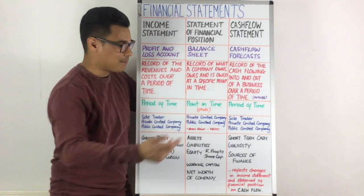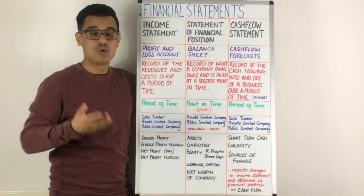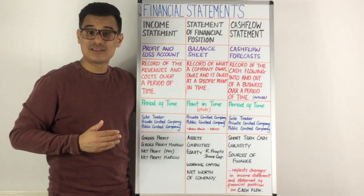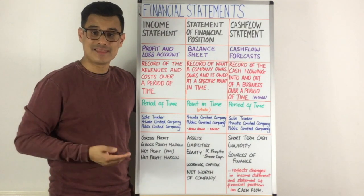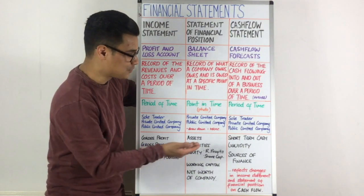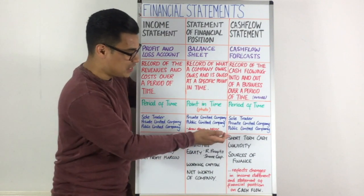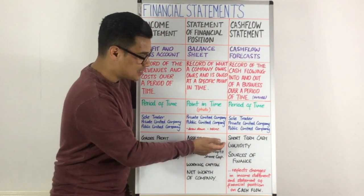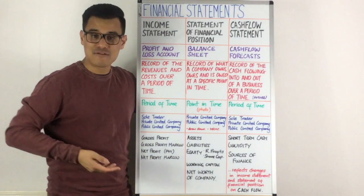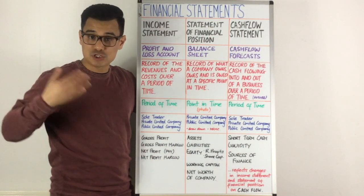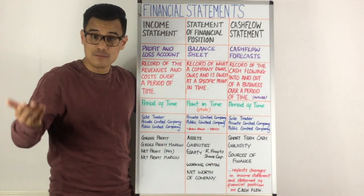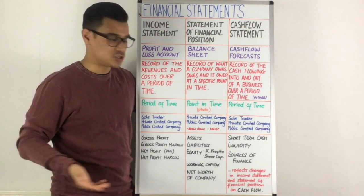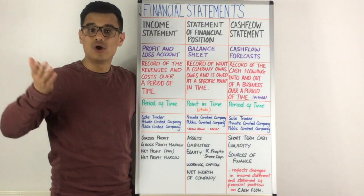Sole traders, private limited companies, and public limited companies will all use cash flow forecasts in order to help inform their decisions in the future. They want to see their cash position, and that's exactly what it's going to tell you — your short-term cash position. It's going to tell you how liquid you are, how much cash you have so you can meet your short-term obligations and your short-term debts. So it's showing you your liquidity.